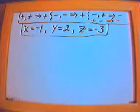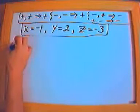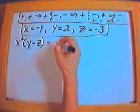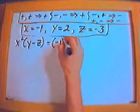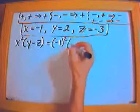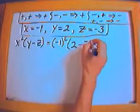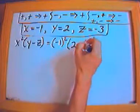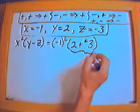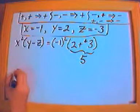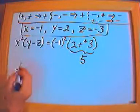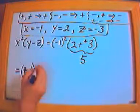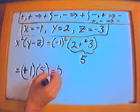Let's do one more of this type: x squared times (y minus z). That equals (negative 1) squared times (2 minus negative 3). When you minus a negative, it becomes plus a positive, so this is really 2 plus 3 which equals 5. Negative 1 squared is negative 1 times negative 1; negative times negative gives positive 1. Then 1 times 5 is positive 5, and that is the answer.